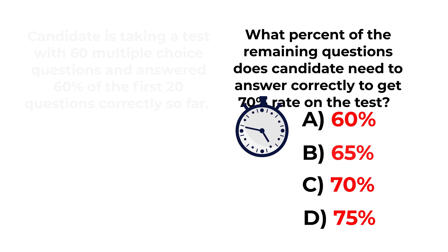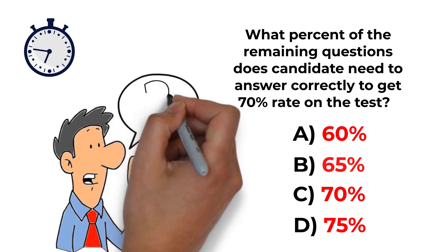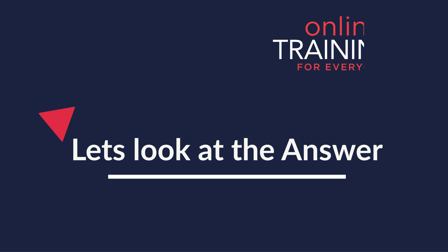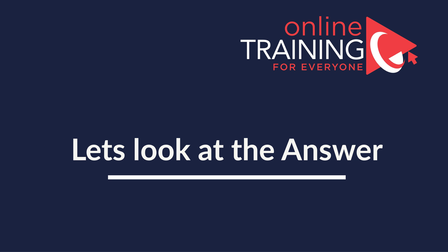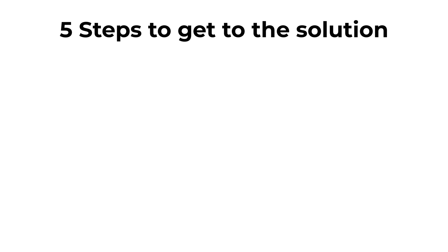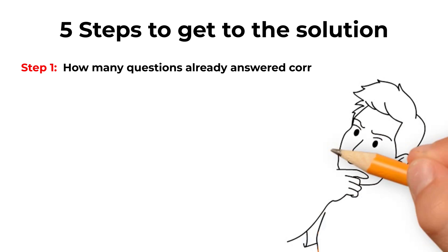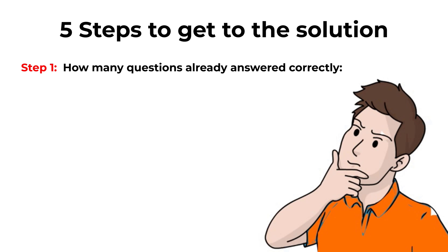Ready or not, I'm going to move forward and reveal the correct answer. This is a multi-tiered question requiring multiple calculations. First, we calculate how many questions the candidate already answered correctly: 20 questions × 60% = 12 questions answered correctly so far.